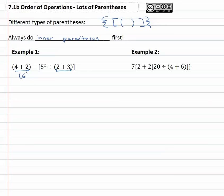So 4 + 2, that's 6 - [5² ÷ (5)]. And still working down the order of operations, please excuse my dear aunt Sally or PEMDAS. Still inside the parentheses, the exponent must be done next.